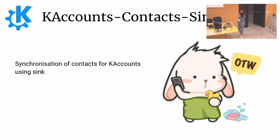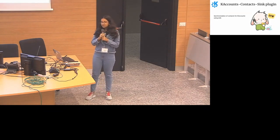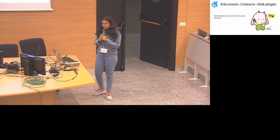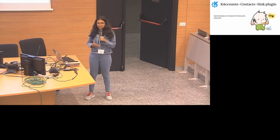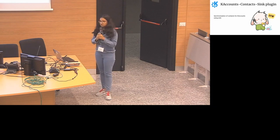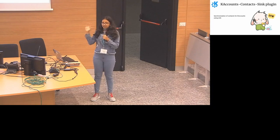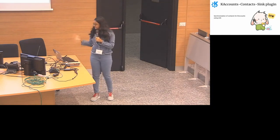Next is the K-accounts contact sync plugin. K-accounts is a system to add and manage accounts on Plasma Mobile. Buteo Sync is a data access layer that manages synchronization, caching, and indexing. I used a Buteo Sync plugin to synchronize the contacts — saving the contacts of accounts managed by K-accounts into the Buteo Sync data source.